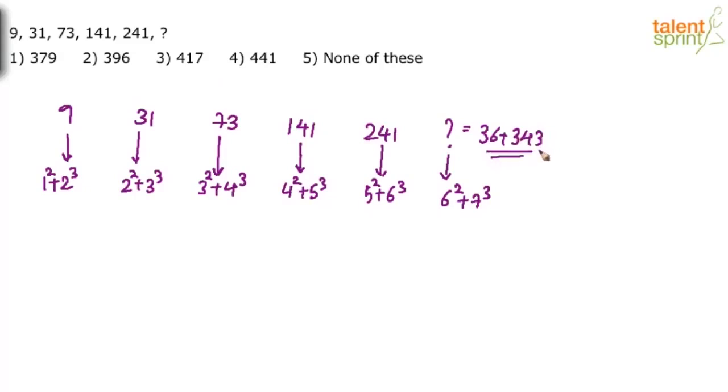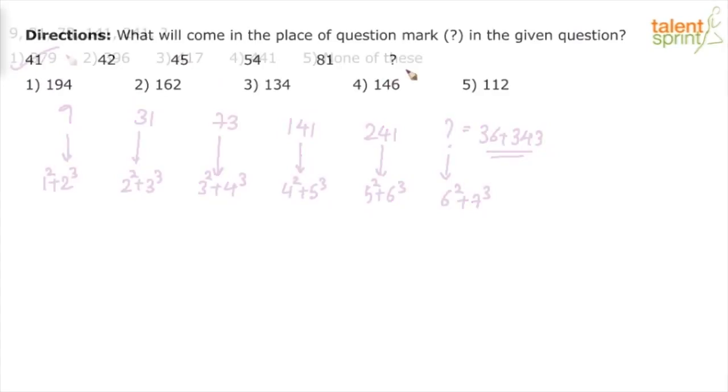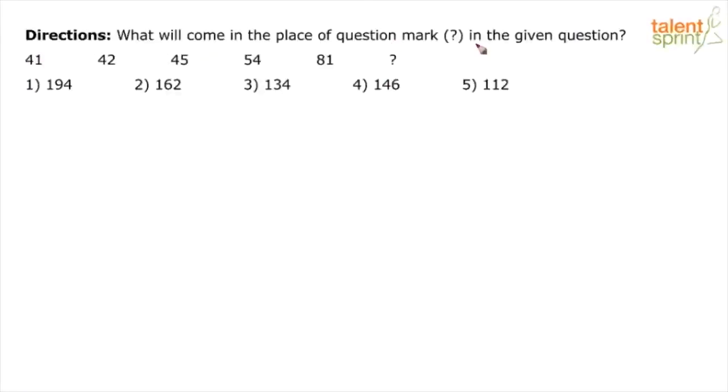So this is like 36 plus, how much is 7 cubed? 343. So how much is 36 and 343 total? 379, option 1. What will come in place of question mark in the given question? Basically a question from number series. Now look at the numbers here: 41, 42, 45, 54, 81. So it doesn't look like a series which has got some multiplications involved.